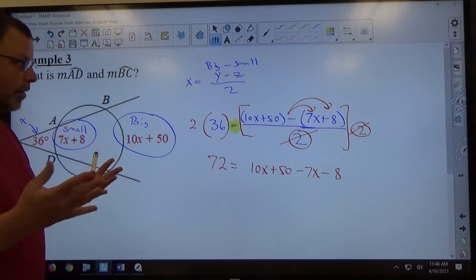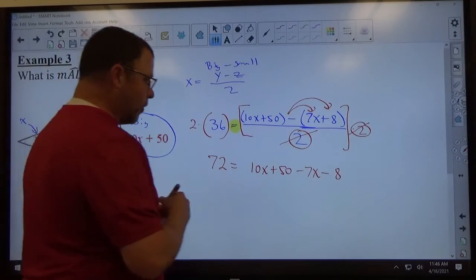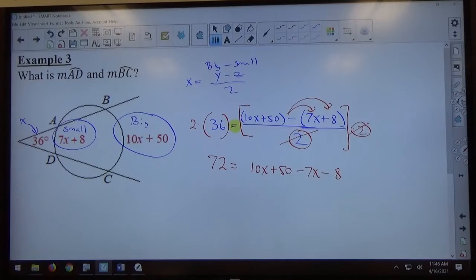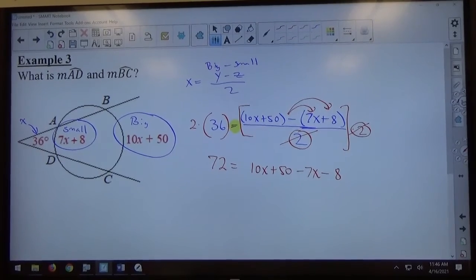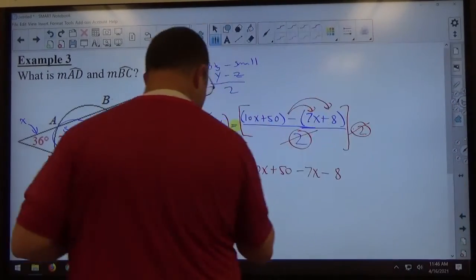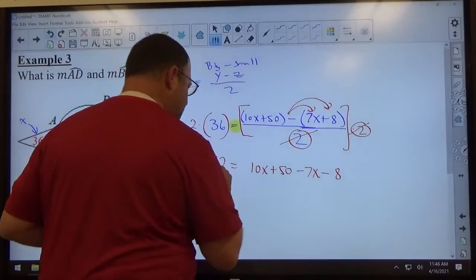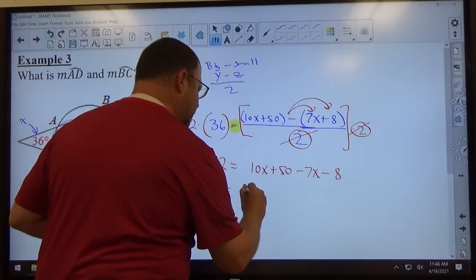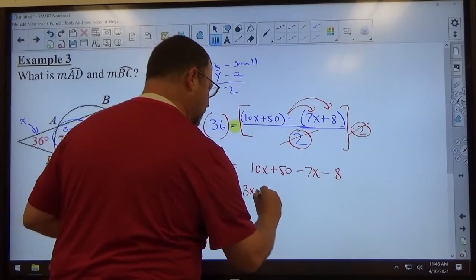At this point, it's an equation with a bunch of letters and numbers in it, so I'm going to group my x's, group my numbers. So if I group my x's and my numbers, I'm going to get 72, nothing's happening to 72 right now. 10x minus 7x is 3x, and 50 minus 8 is plus 42.